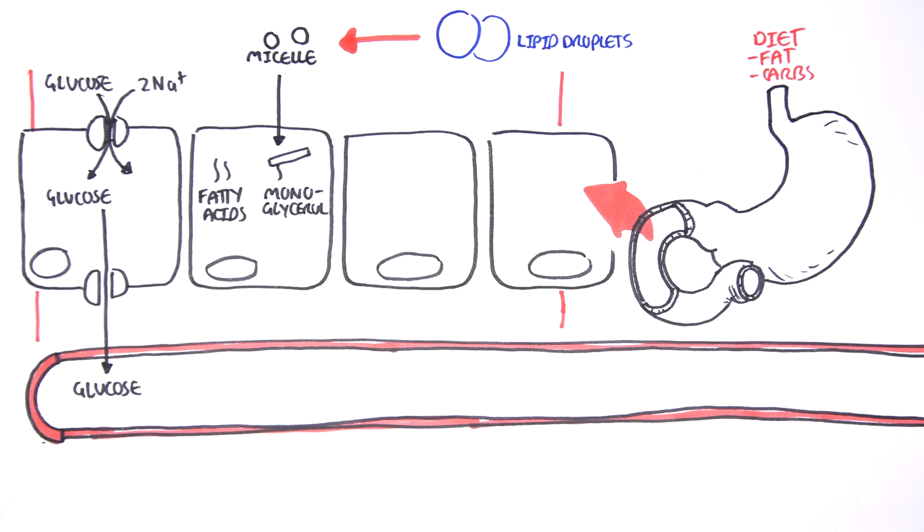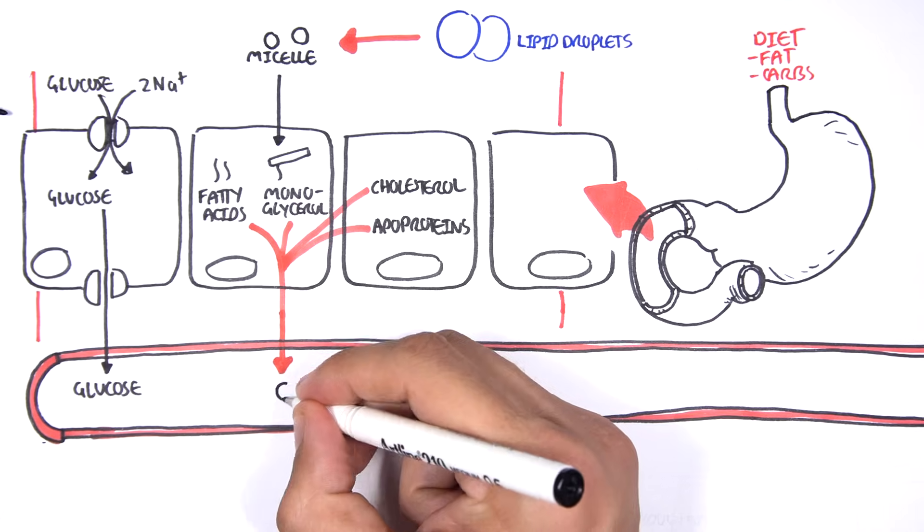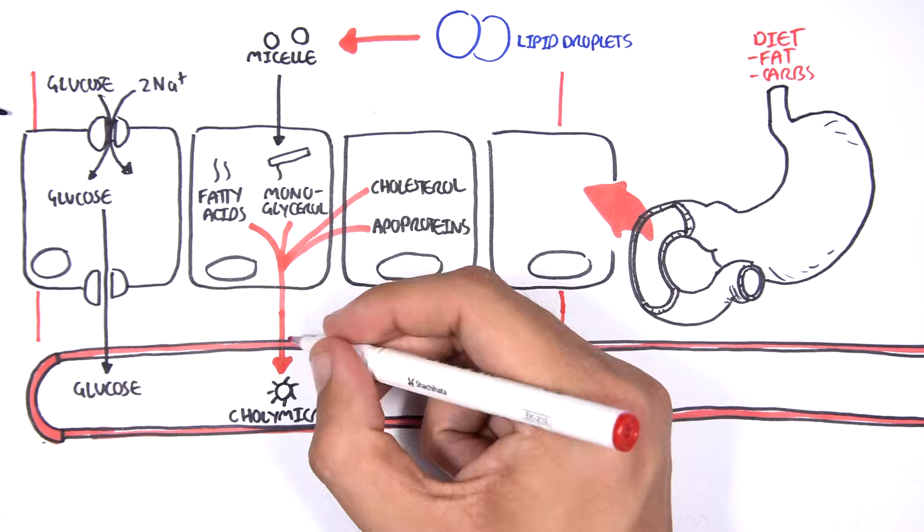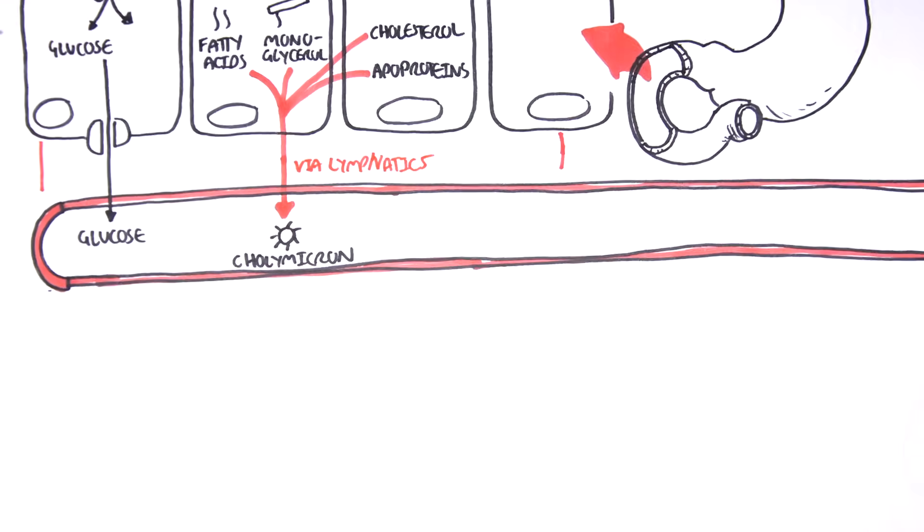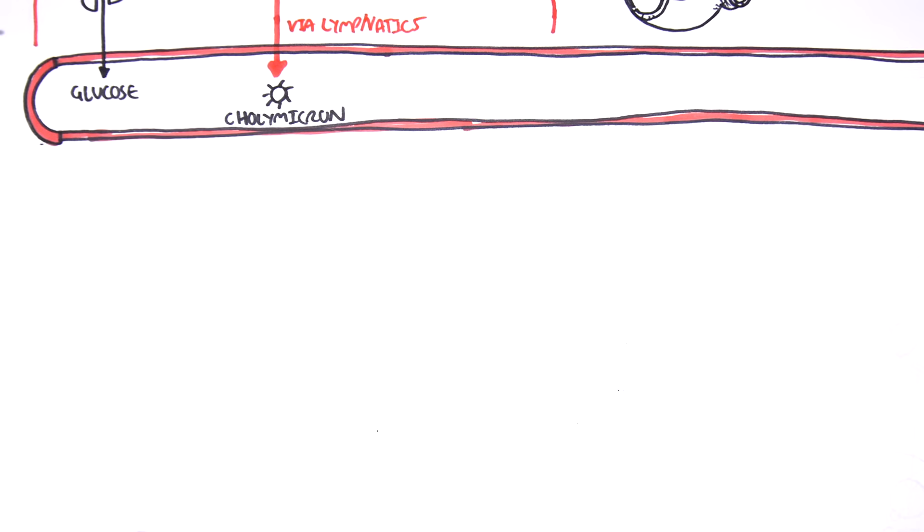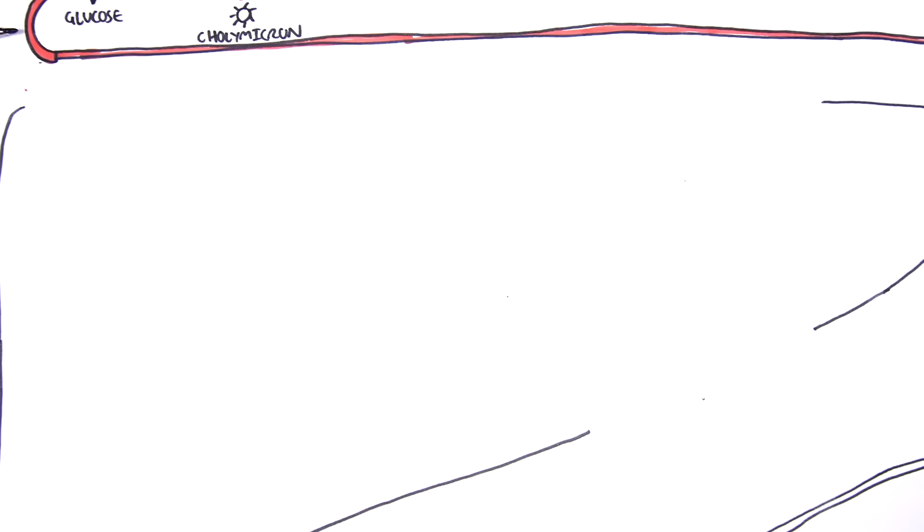The intestinal cells will then package the monoglycerides, fatty acids, cholesterol, and apoproteins to form the chylomicron. Chylomicrons are predominantly lipids with little apoproteins and also contain phospholipids. The chylomicrons are absorbed into the lymphatic system before moving into the blood via the subclavian vein. The chylomicrons then circulate around the body, delivering triglycerides to tissues that need it for energy.